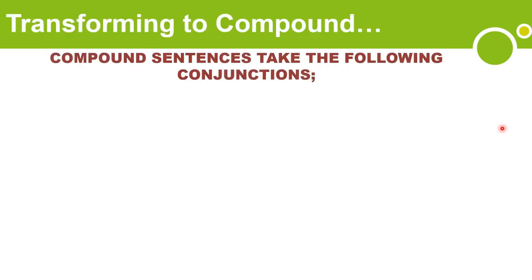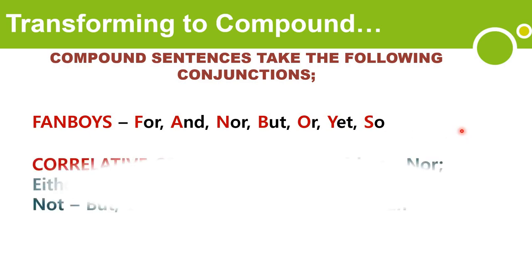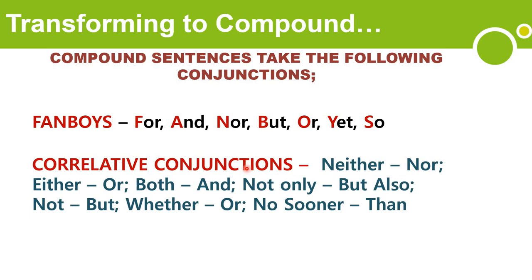How do you transform to compound? When transforming to compound, we use coordinating conjunctions — the FANBOYS: For, And, Nor, But, Or, Yet, and So. Or you can use correlative conjunctions, which are used together in pairs: neither/nor, either/or, both/and, not only/but also, whether/or, no sooner/than. These are correlative conjunctions. Keep these in mind whenever you have to form a compound sentence.